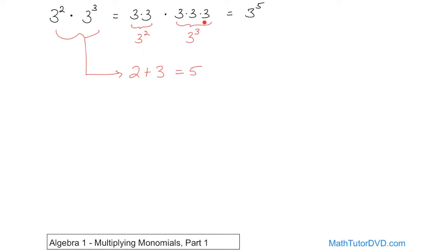You don't need to write this out every time — I'm just showing you this so that you'll understand. Really, the way it works is: when you're multiplying something with an exponent times something else with an exponent, if the bases — the bottom numbers — are the same, then you just add the exponents together. So 3 raised to the power of 5. And that works for variables just like it does for numbers.